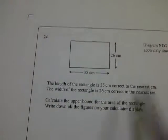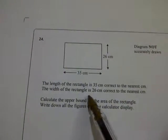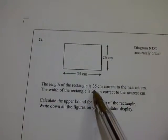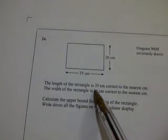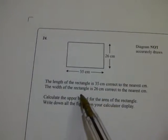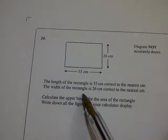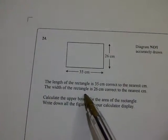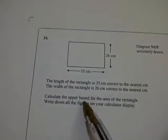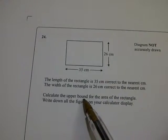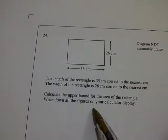Question number 24 says the length of a rectangle is 35 centimeters correct to the nearest centimeter, and the width of the rectangle is 26 centimeters correct to the nearest centimeter. Calculate the upper bound for the area of the rectangle, writing all the figures on your calculator display.